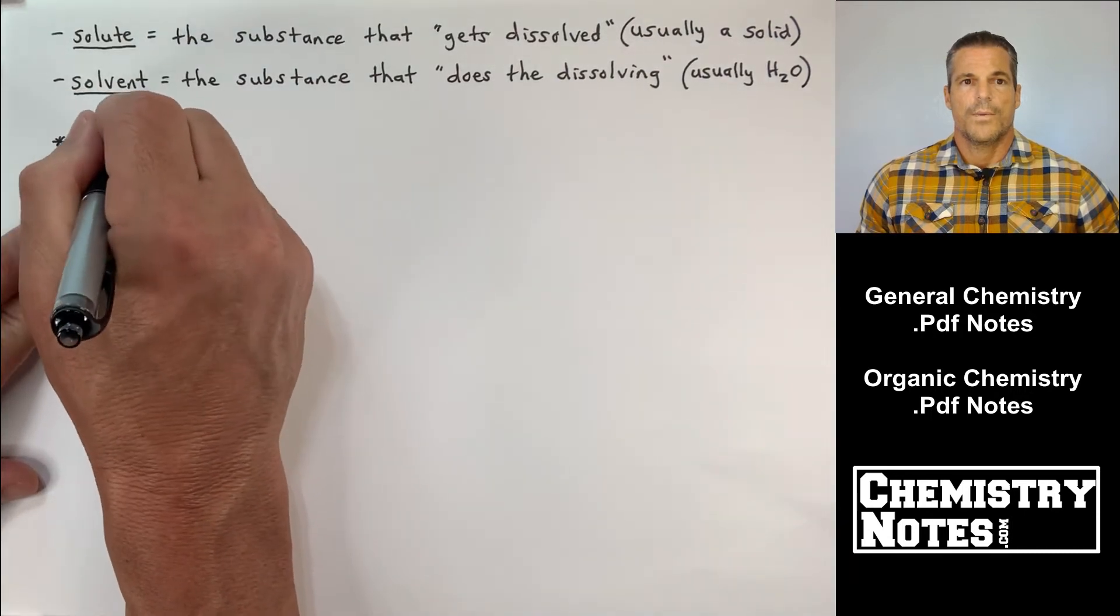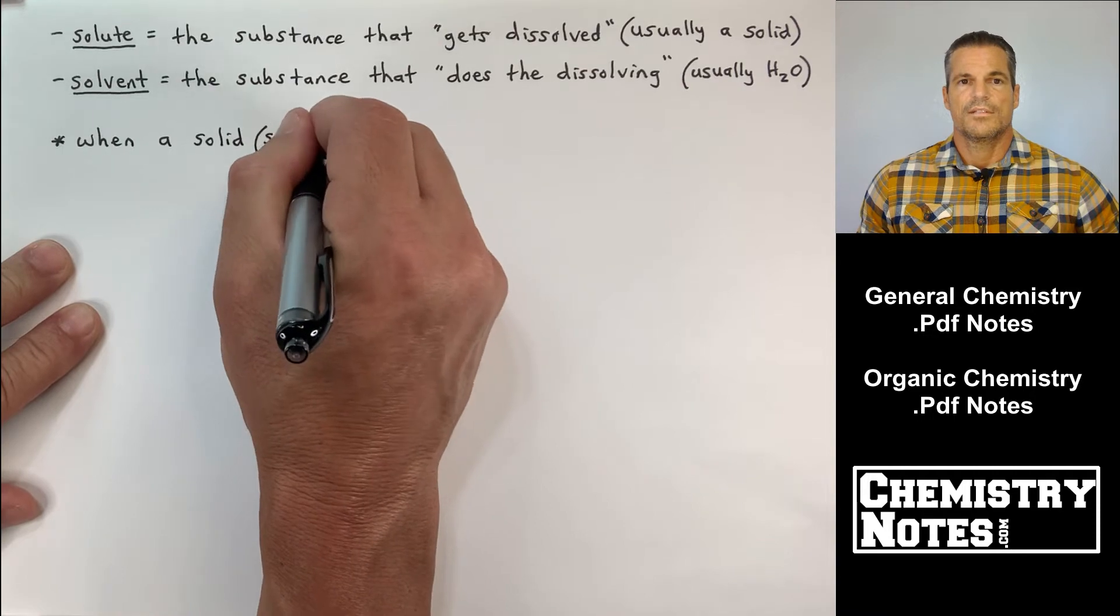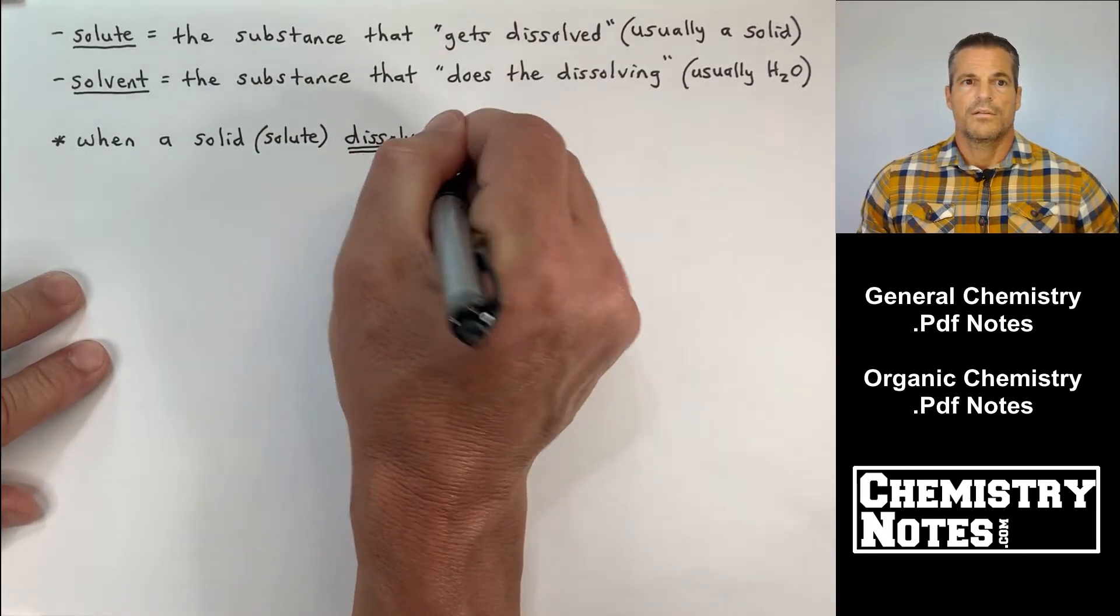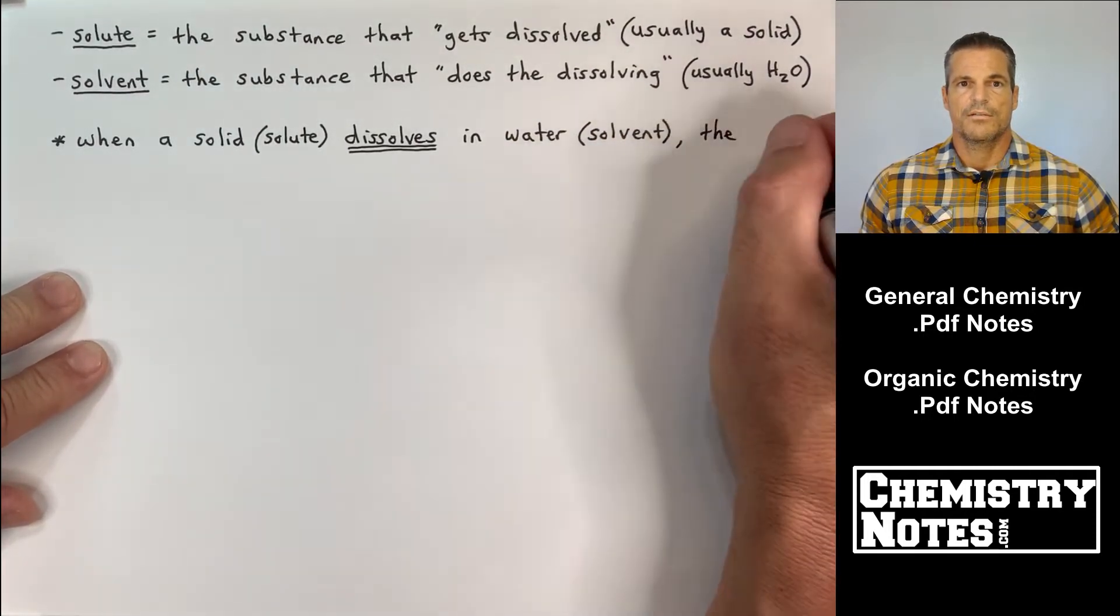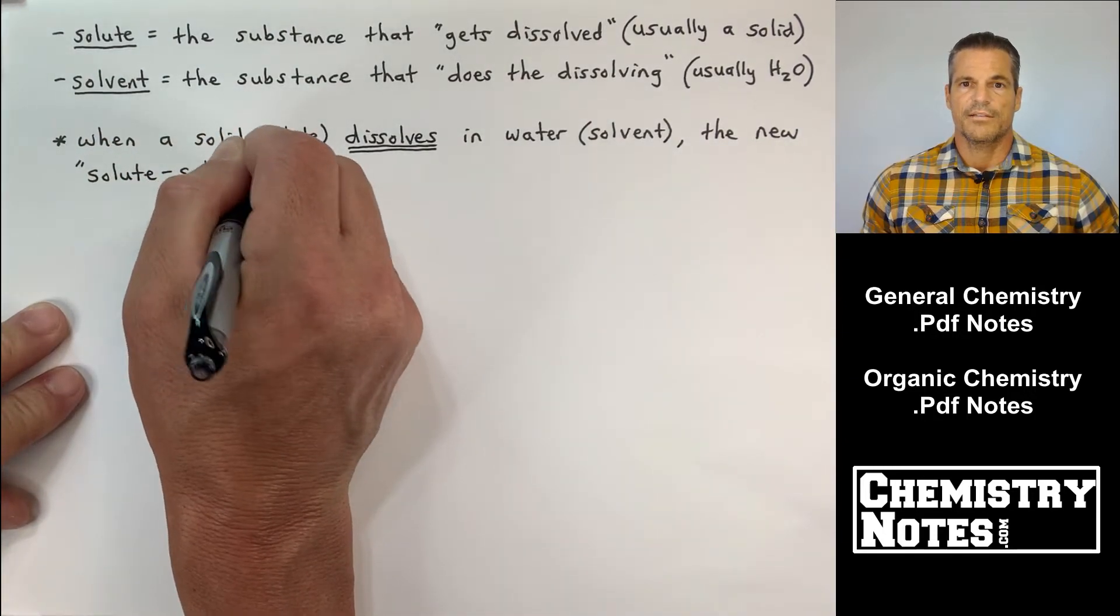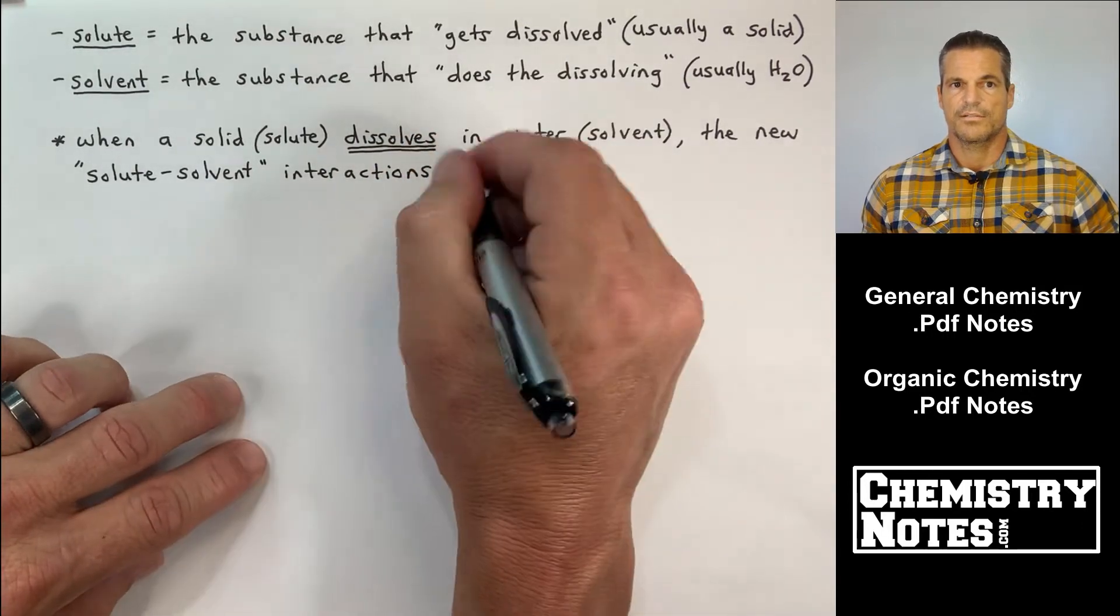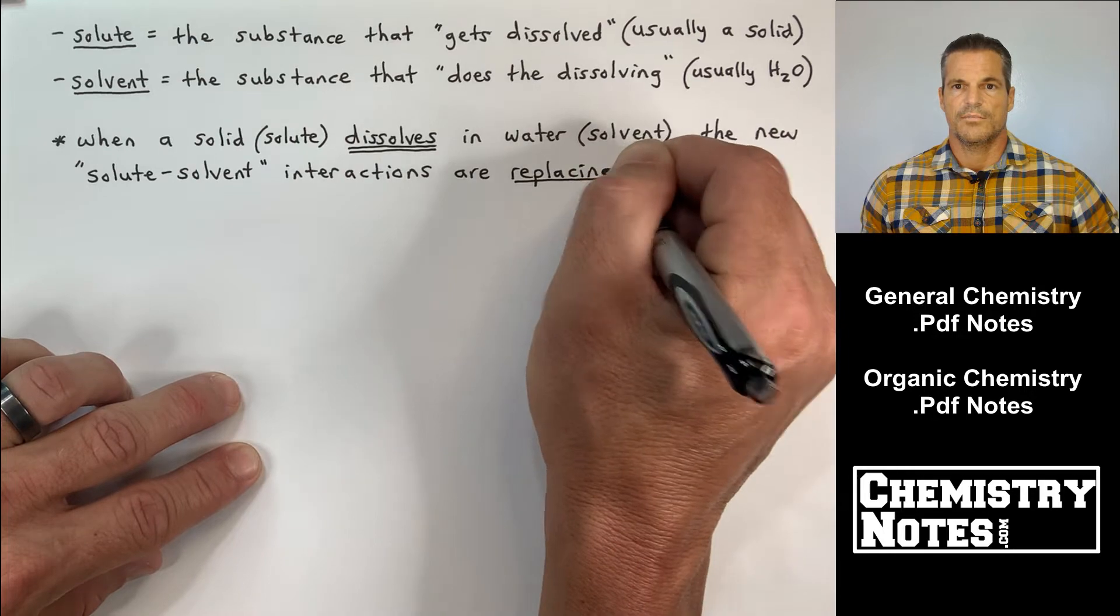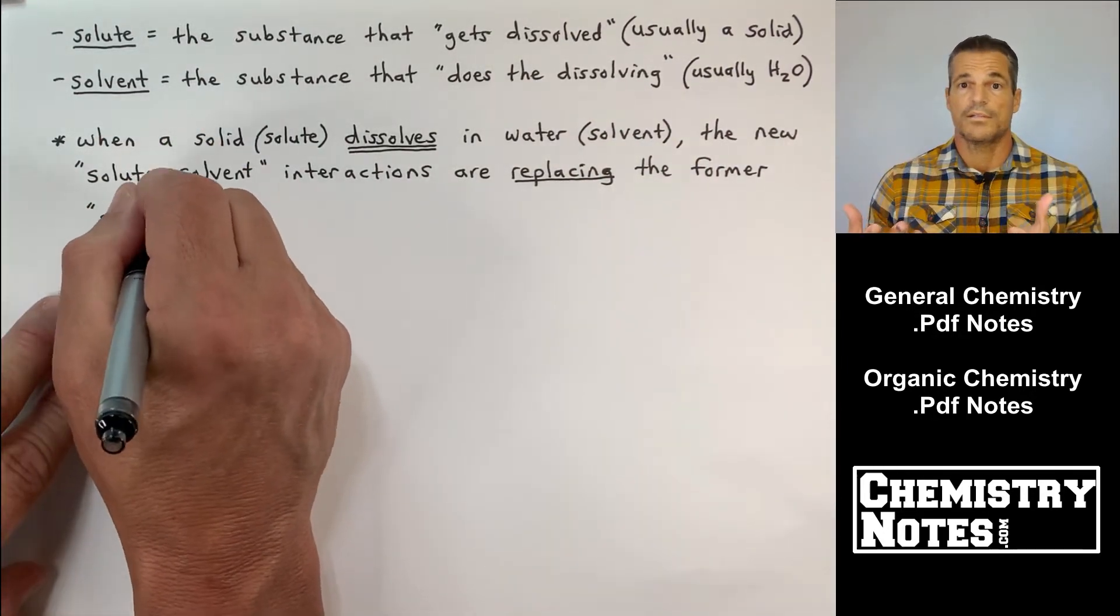Okay, so when a solid, in other words a solute, dissolves in water, water being our solvent, the new solute-solvent interactions are replacing the previous solute-solute interactions. All right, so a solute-solute interaction is basically like a hunk of sugar or some grains of salt that you want to dissolve.